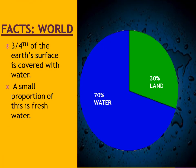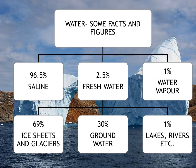Our earth's 3/4th surface, or 70% area, is covered with water, and only 30% area is covered with land. Of that 70% water, 96.5% is saltwater, 2.5% is fresh water, and only 1% water is in the form of water vapor. Of that fresh water, 69% is in the form of ice sheets or glaciers.